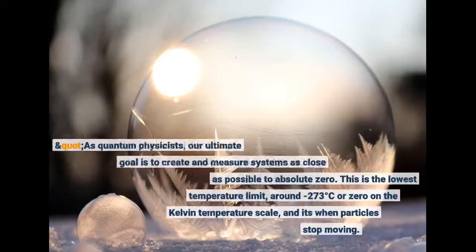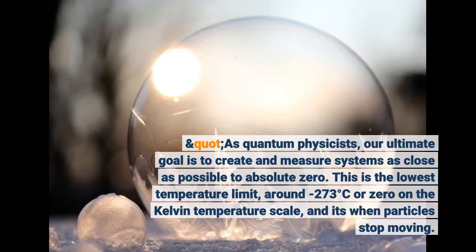As quantum physicists, our ultimate goal is to create and measure systems as close as possible to absolute zero. This is the lowest temperature limit, around minus 273 degrees Celsius or zero on the Kelvin temperature scale, and it's when particles stop moving.